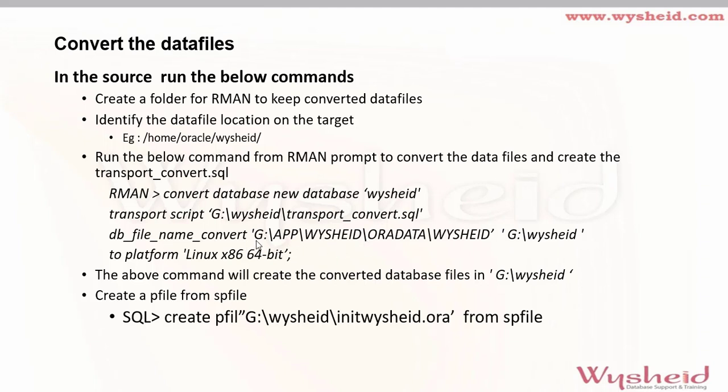Using DB_FILE_NAME_CONVERT, we provide the path of our data files on Windows as the first parameter, then the path of our target folder as the second parameter — this is the folder where converted data files will be created. We also specify the target platform: 'Linux x86 64-bit'. Once the command completes, the G drive vysheath folder will contain the converted data files and the transport script. We then create a pfile from the spfile, copy it to the target, and modify it there.